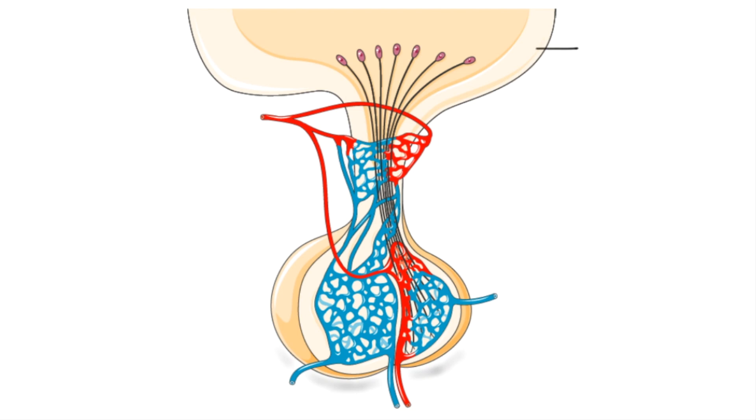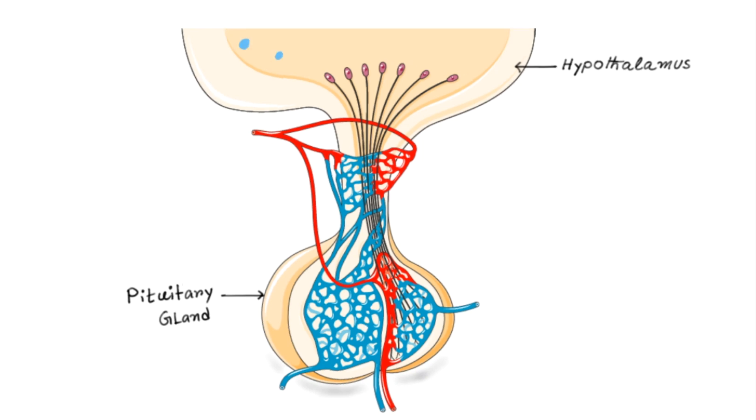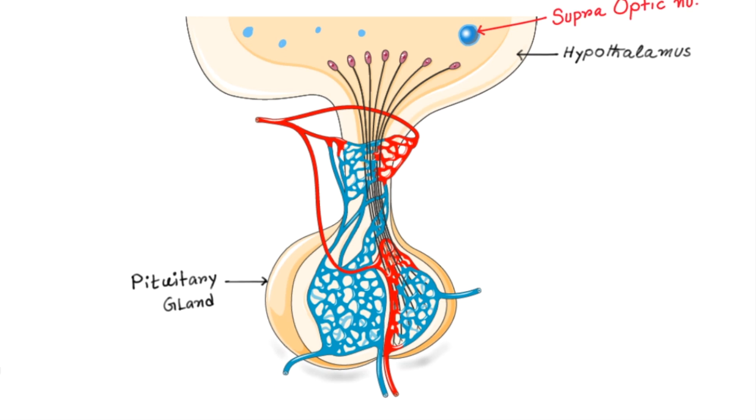Let's see where the ADH comes from. Here this is hypothalamus and just beneath the hypothalamus there is pituitary gland. There are lots of nucleus present in the hypothalamus. One of such important nucleus is supraoptic nucleus. This nucleus synthesizes ADH which comes down to the pituitary gland.